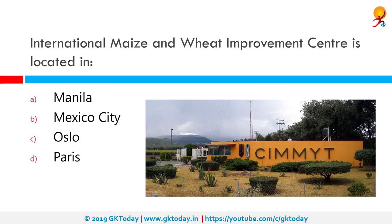The International Maize and Wheat Improvement Center is located where? It is located in Mexico City. It is a non-profit research and training institution dedicated to developing improved varieties of wheat and maize, contributing to food security and introducing improved agricultural practices to smallholder farmers to boost production, prevent crop disease, and improve their livelihoods.